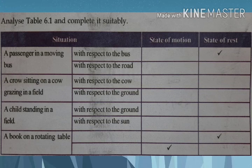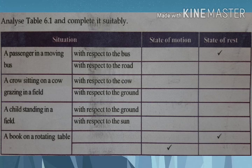Look at the table. A passenger in a moving bus: with respect to the bus, the passenger is at rest — here, bus is the reference body. With respect to the road, the passenger is moving — here, road is the reference body. Next, a crow sitting on a cow grazing in a field: with respect to the cow, the crow is at rest, so the cow is the reference body. But with respect to the ground, the crow is moving, so the ground is the reference body.